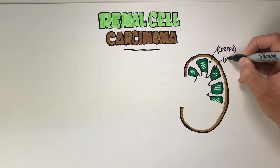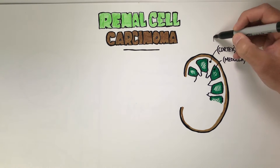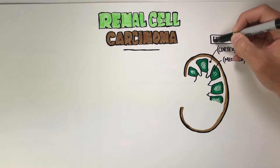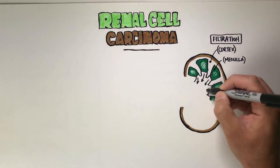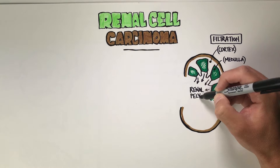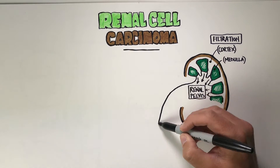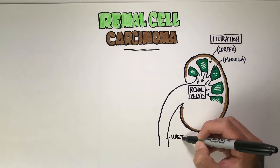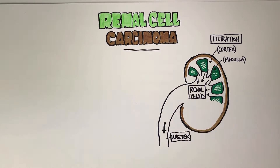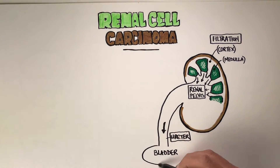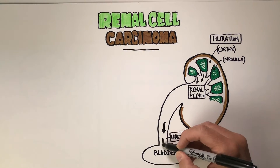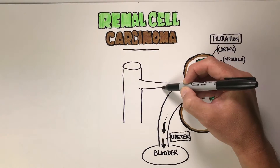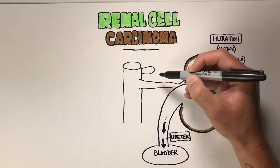The outer rim is called the cortex, and these inner functional pockets are called the medulla, involved in the filtration of the blood. When the urine is made, it is dropped into the renal pelvis, which is still inside the kidney, but it doesn't stay there long — it exits through the ureter down towards the bladder. That gives you the idea of where the filtration goes.